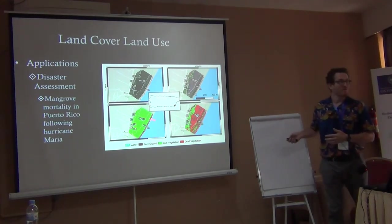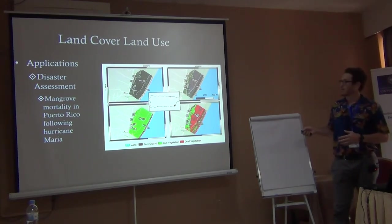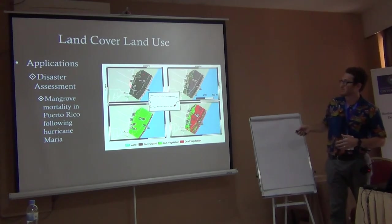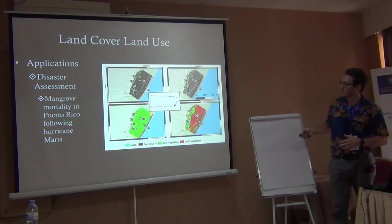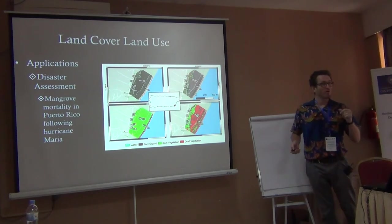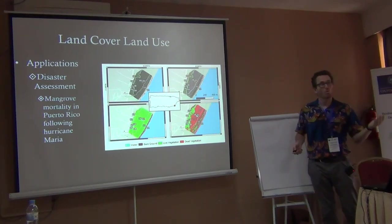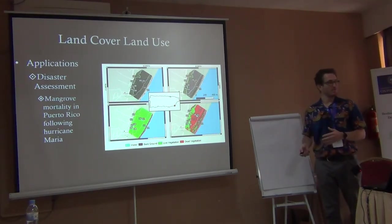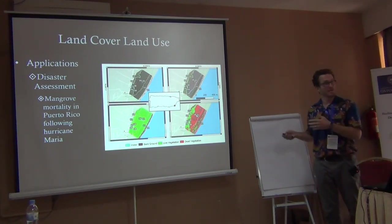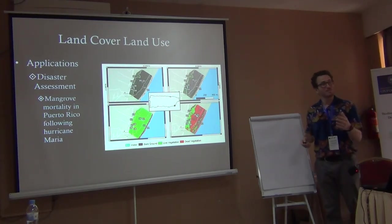A personal application: Hurricane Maria in Puerto Rico. We flew a drone over mangrove sites before and after the hurricane and used classification to tell which was alive vegetation and which was dead. This allowed us, within a couple months, to produce a map of where mangroves had died across the island using our supervised classification — a rapid assessment of how land is changing.